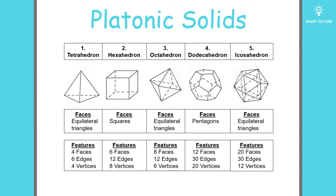And lastly, we'll look at an icosahedron. The faces are all equilateral triangles. An icosahedron has 20 faces, 30 edges, and 12 vertices.